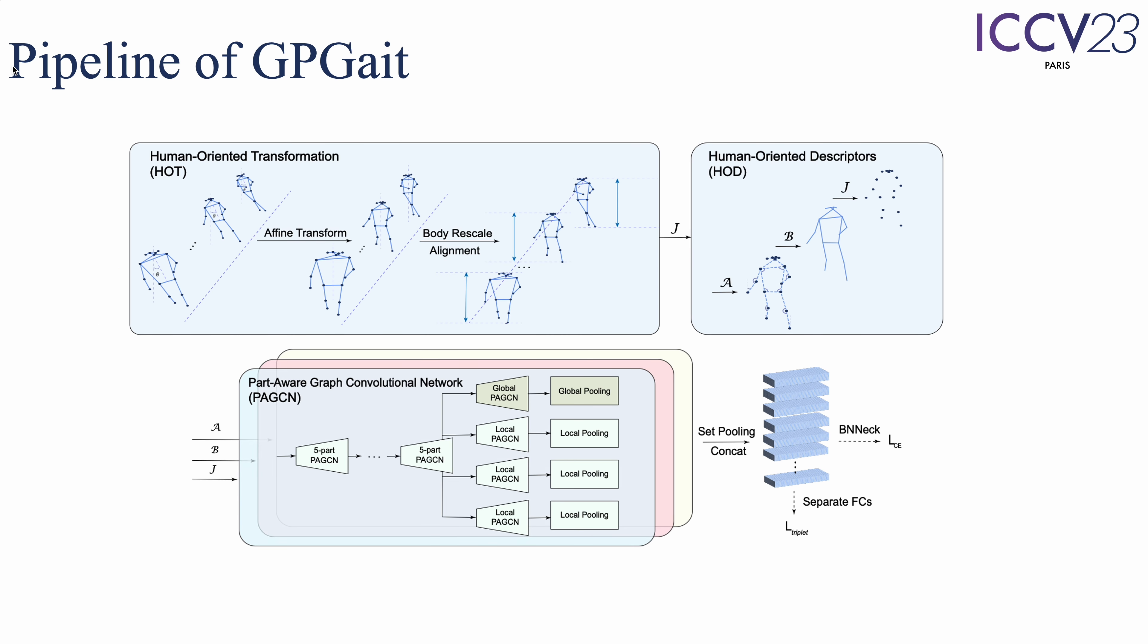In the GPGait framework, the original pose sequence is first transformed into a unified representation by Human-Oriented Transformation. Then, angle, bone, and joint features generated by human-oriented descriptors are learned dependently through a multi-branch network named PAGCN. The output features are concatenated in part dimension and learned by a fully connected layer separately.